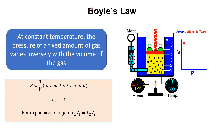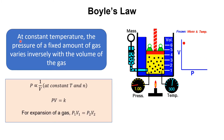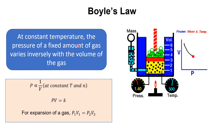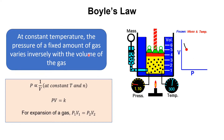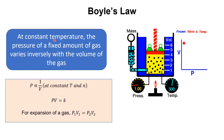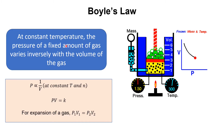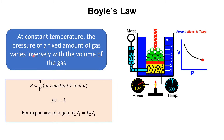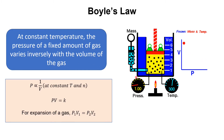Let's start from Boyle's Law. According to this law, at constant temperature, the pressure of a fixed amount of gas varies inversely with the volume of the gas. In this definition, the temperature is constant and the amount of gas is constant. Only the pressure and the volume of the gas are varying.